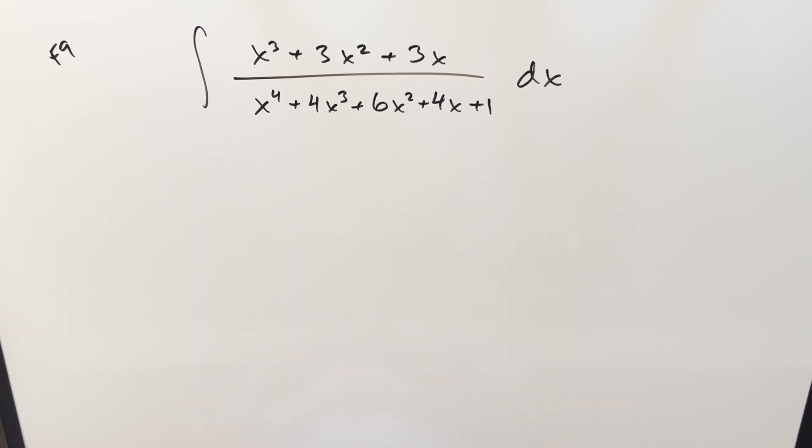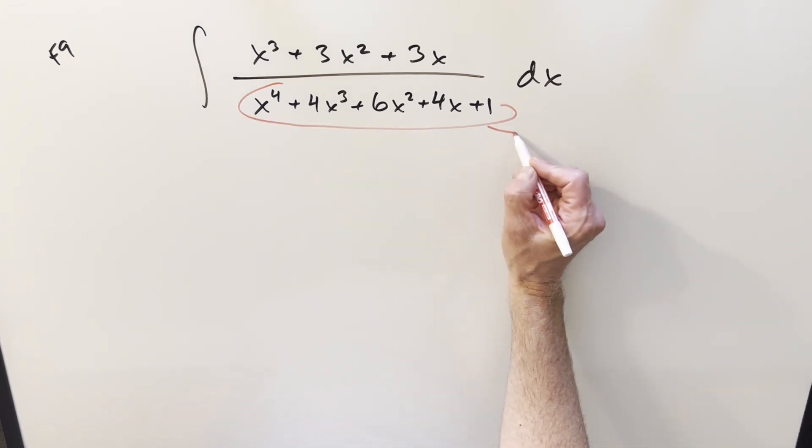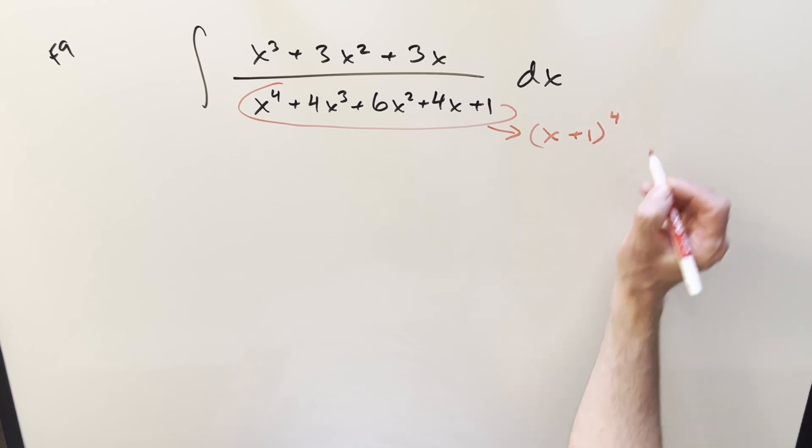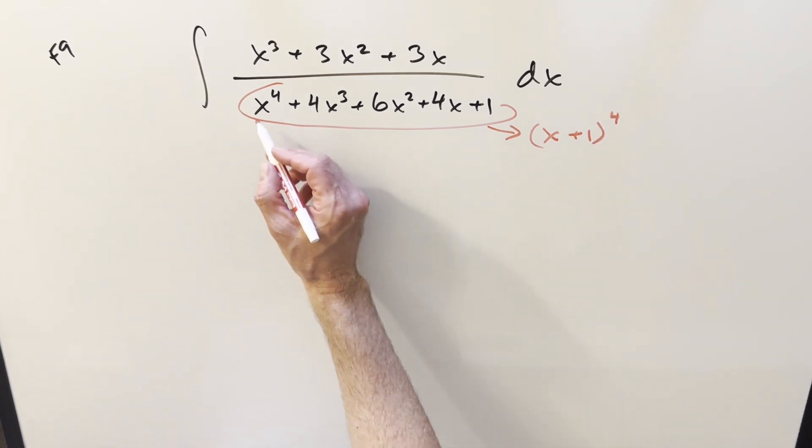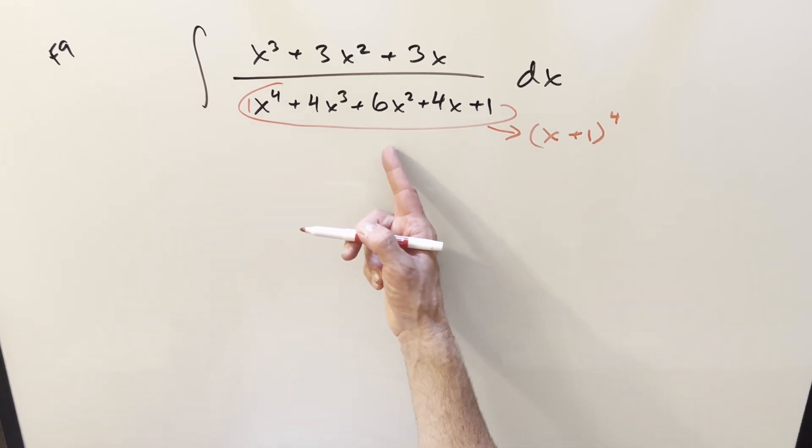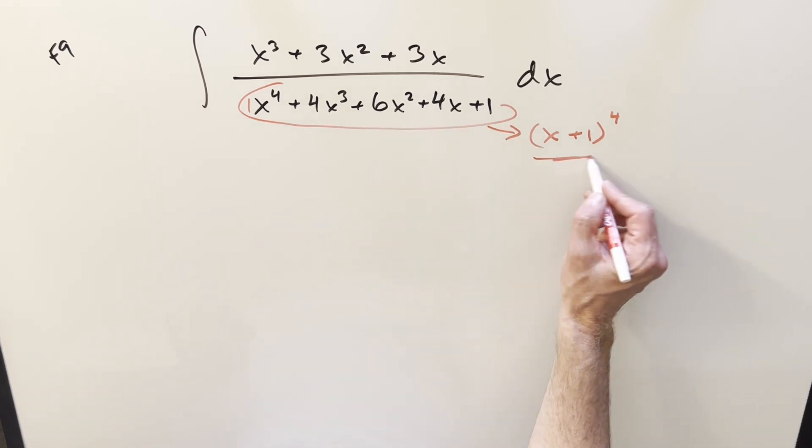Let's deal with the denominator first. This is going to be pretty easy to simplify. This is the same thing as (x+1)⁴. You can just notice by the coefficients, it's in the form with Pascal's triangle: 1, 4, 6, 4, 1, or a binomial coefficient. So we can simplify the denominator like this.